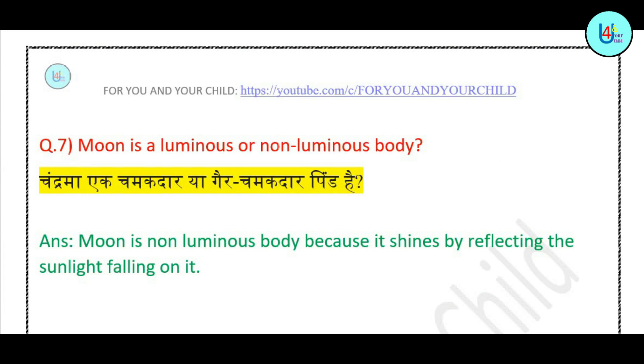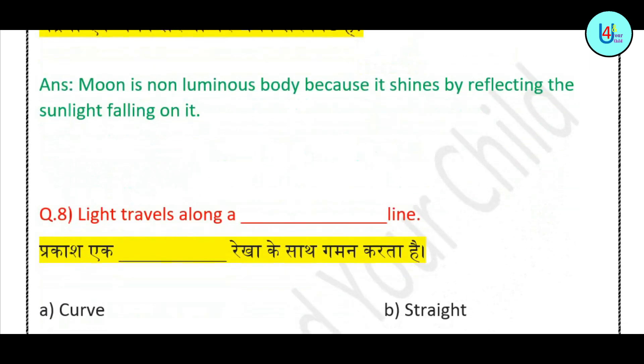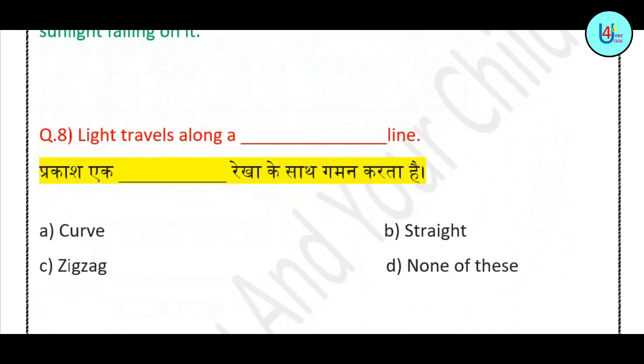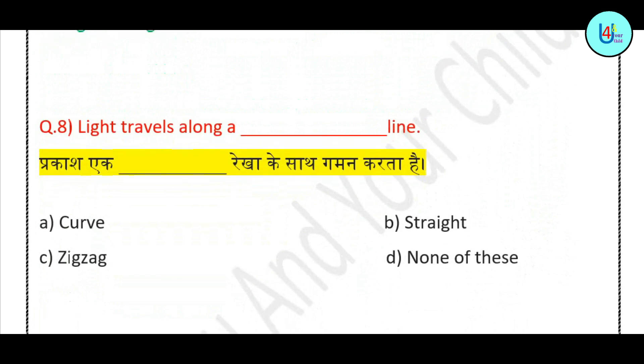Question number 8: Light travels along a — curve, straight, zig-zag, or none of these? Correct answer is: straight line.